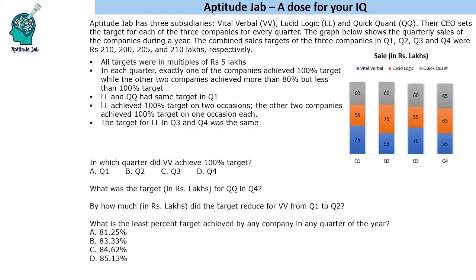The next condition says LL and QQ had the same target in Q1. So let us start with Q1. This indirectly means that LL cannot achieve 100% in Q1, because if LL achieved 100%, then QQ — having the same target — would achieve more than 100%, which is not possible. So either QQ will achieve 100% or VV will achieve 100%.